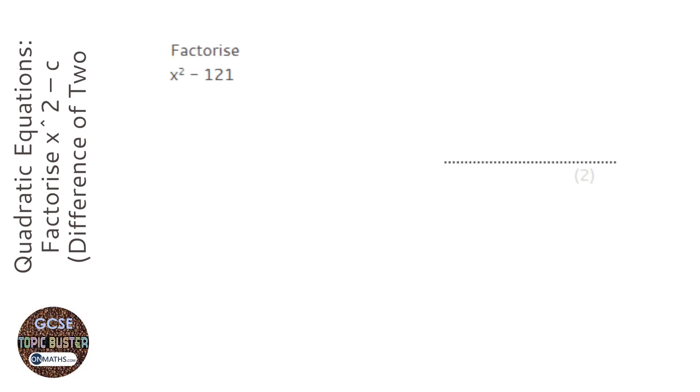This question asks us to factorise a special type of quadratic. One way of thinking about this is we've got x² + 0x - 121.